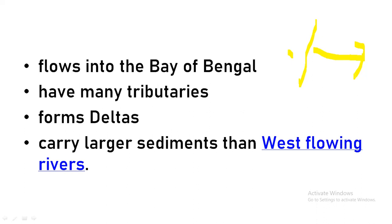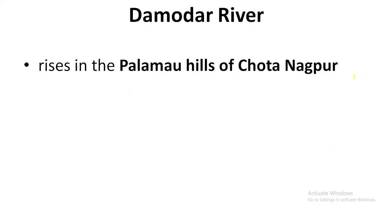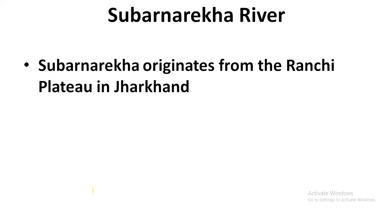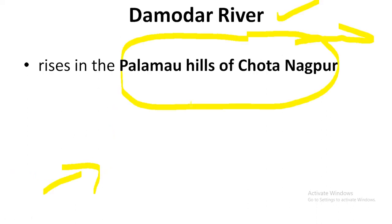Next is Subarnarekha River. Subarnarekha originates from the Ranchi Plateau in Jharkhand. So Damodar is from Palamu Hills of Chota Nagpur Plateau, and Subarnarekha is from Ranchi Plateau in Jharkhand. Next, Baitarani River — Baitarani River originates from Gonasika Hills in Keonjhar district of Odisha.